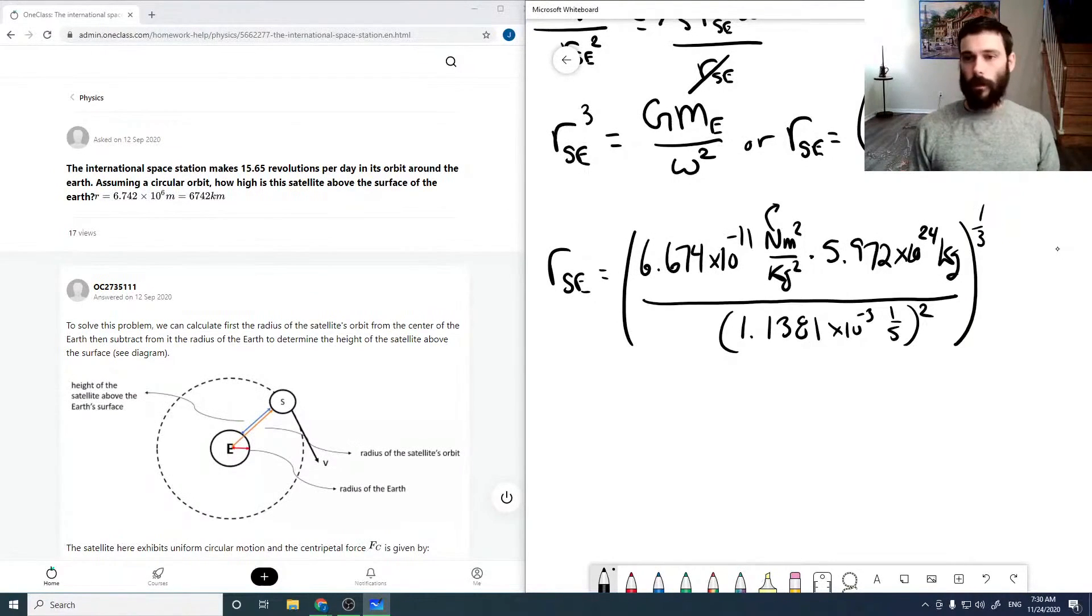Remember that a newton is a kilogram meter per second squared, so the second squared down here will cancel with that. This kilogram with that kilogram will cancel with the kilogram squared. And we're going to have a meters cubed left over, which makes sense because we're going to cube root it, giving us an answer in meters.